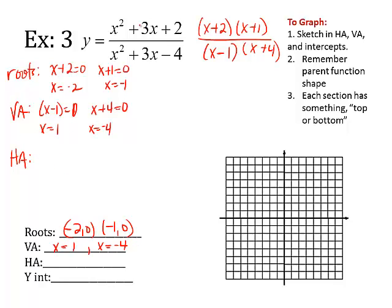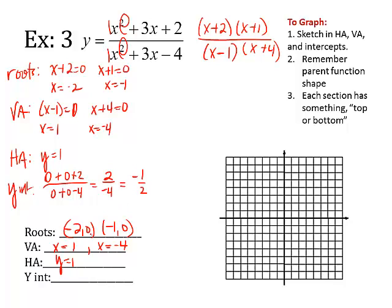All right? And y intercepts. Put in a zero for x. Zero plus zero plus two over zero plus zero minus four. That reduces to negative one-half. So I have zero and negative one-half.